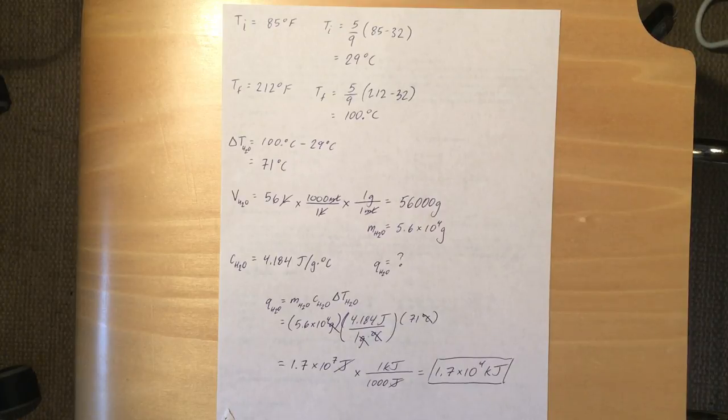And then as you can see, the grams and degrees Celsius cancel out, leaving us with joules. And joules is a great unit of energy, especially because we want to get to kilojoules at the end of the problem.